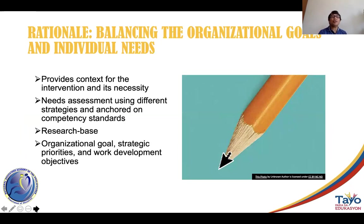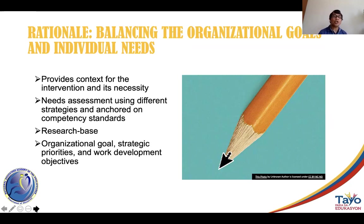We begin with the rationale. The rationale provides the context for the intervention and its necessity. You look at two levels of context. At the context of the individual, you gather data on what participants really need through needs assessment — this is where human-centered design comes in. You engage teachers and ask what they need and how they can be assisted through training or capacity building. You use different strategies such as interviews or standardized survey questionnaires, ensuring there is a research base in the needs assessment.